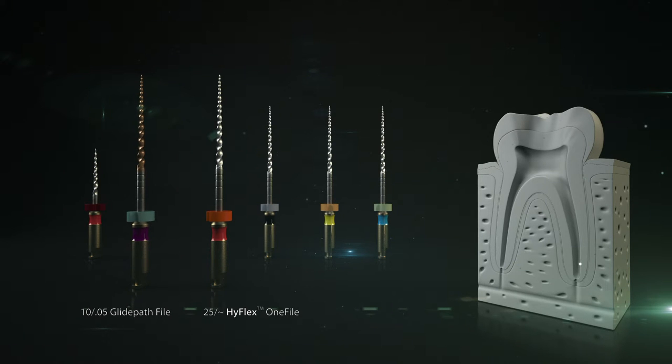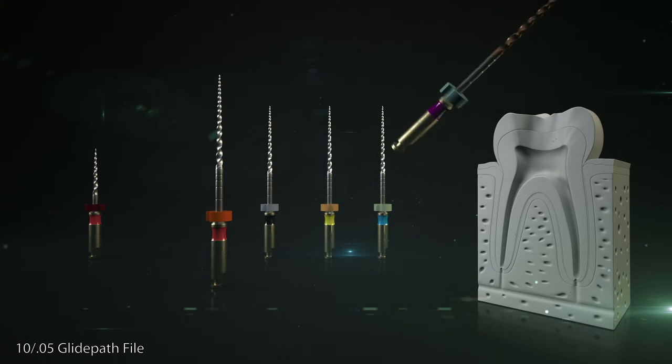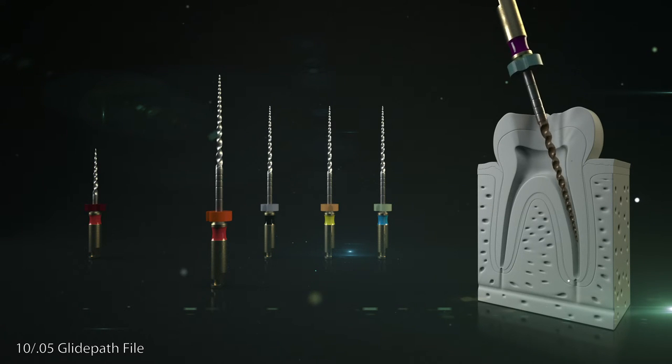Step 1. A 10 over .05 glide path file is used to create a mechanical glide path. The file is used up to its full working length with a pecking motion advancing without pressure. If there is noticeable resistance, the dentist checks the patency with a 20 over .02 manual file.